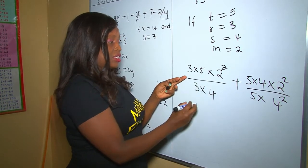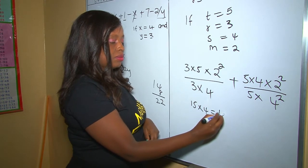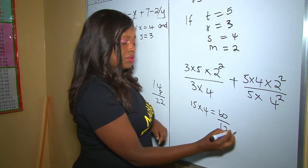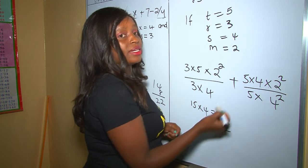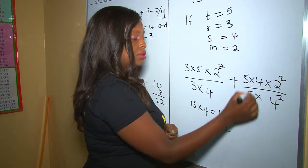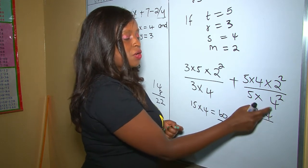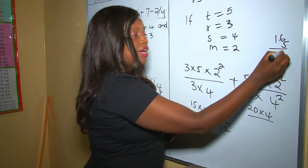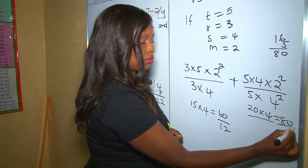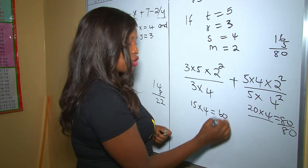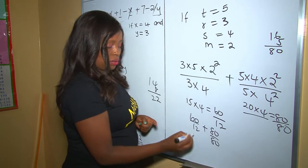Now we can work out: 3 times 5 is 15, times 4 (because 2 squared is 4) is 60, divided by 3 times 4 which is 12. For the second term: 5 times 4 is 20, times 4 (because 2 squared is 4) is 80. All these divided by 5 times 4 squared — 4 squared is 16, and 16 times 5 is 80. Therefore this is 80 over 80.